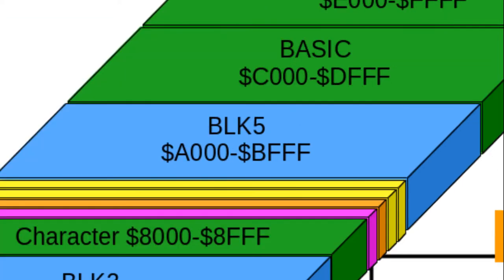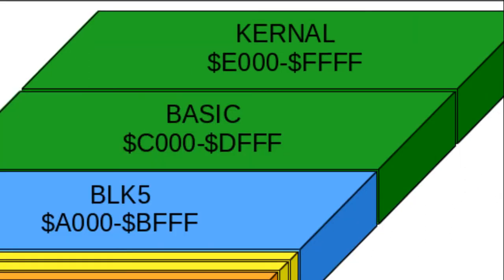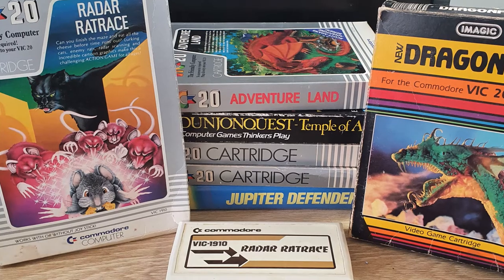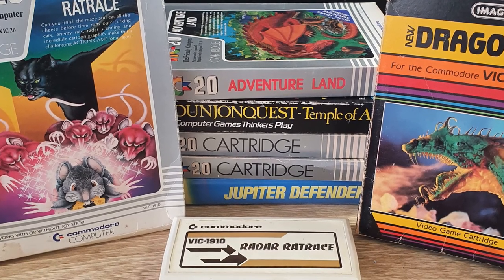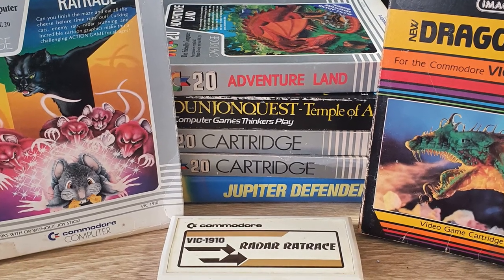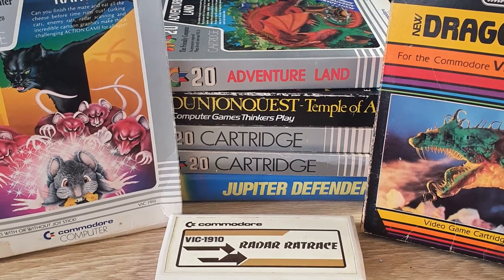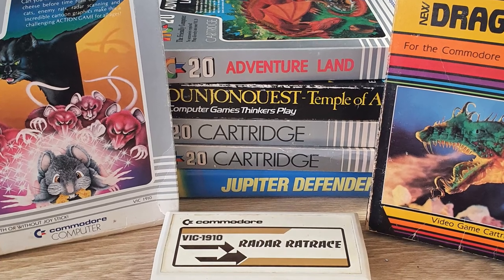Block 5 contains the fourth 8K expansion block and is also where the cartridge auto-start sequence begins. Block 6 and 7 contain the basic kernel ROMs. Given the available address space on the VIC-20, many of the titles released for it came on cartridge in the form of ROMs.